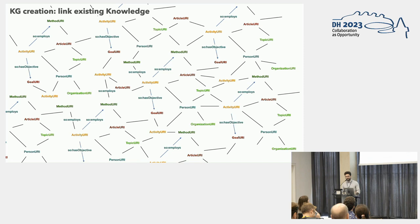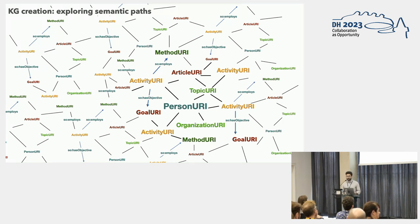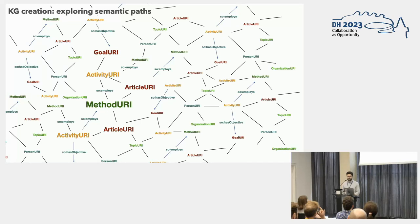Once we add everything to the existing knowledge graph, we can explore various semantic paths to find information. For example, for an author we can find their interests, the articles they have written, their research activities, the objectives they have tackled, and the methods they have used. In other cases, we can retrieve information regarding methods — what kind of articles have mentioned them, what kind of activities have employed them, and what objectives were tackled during that employment.